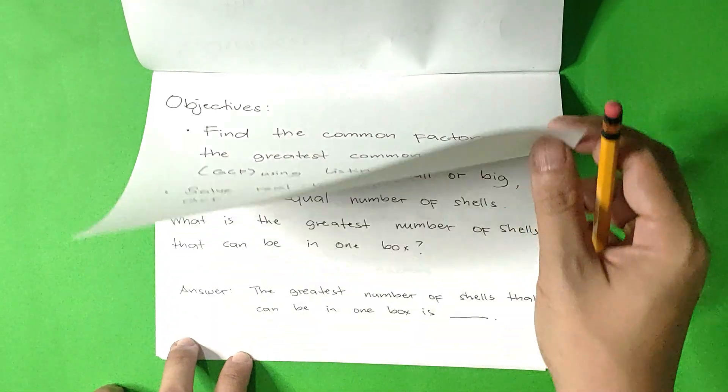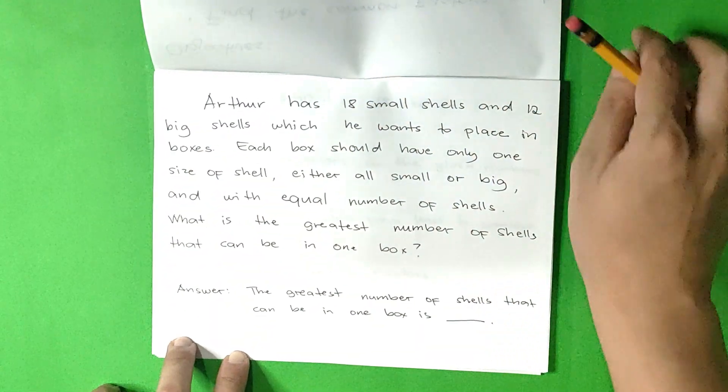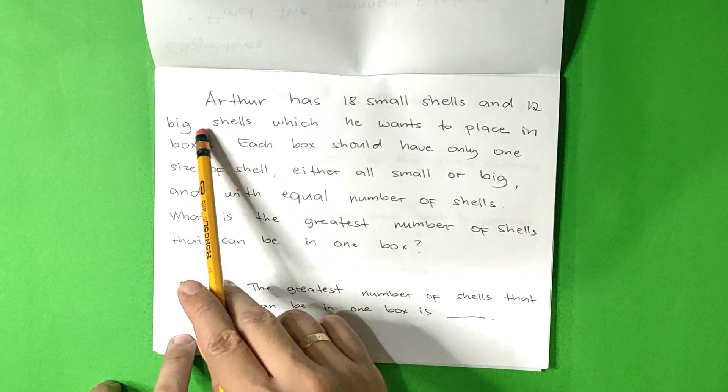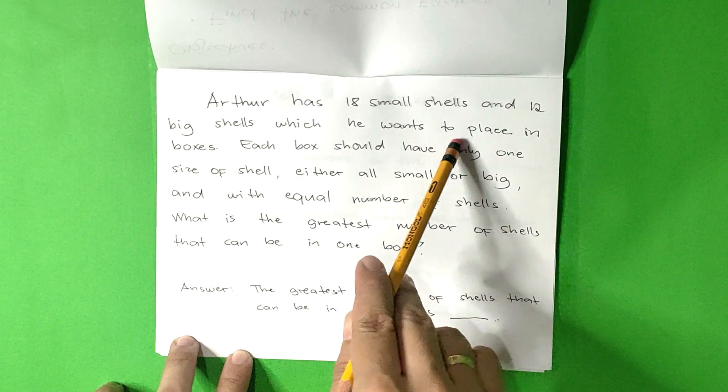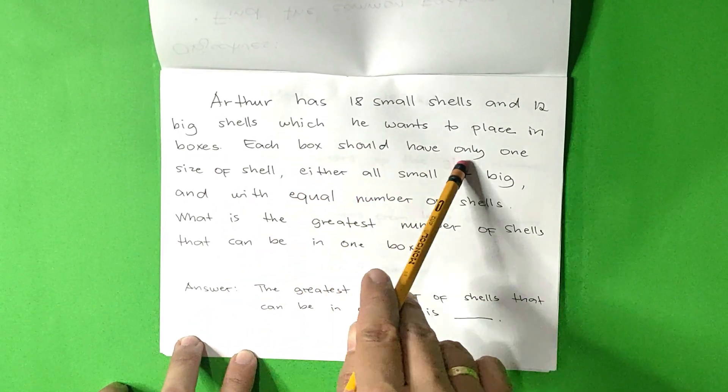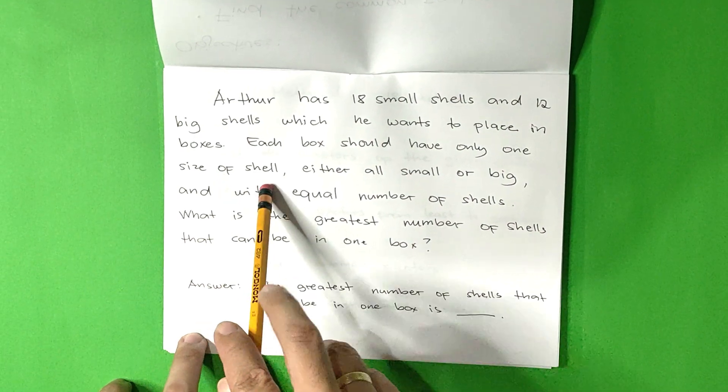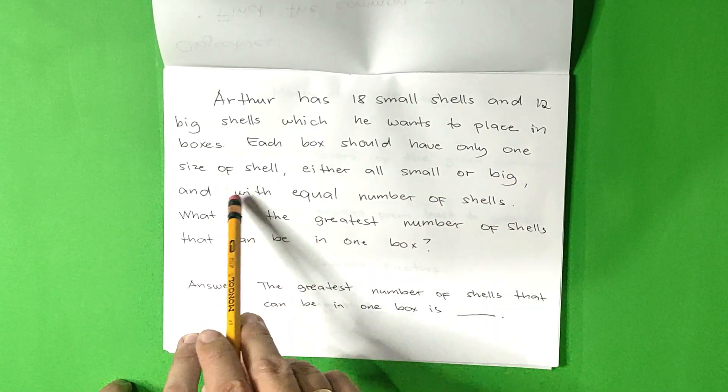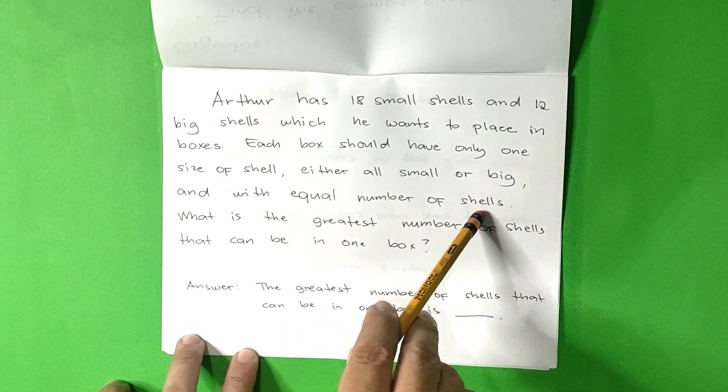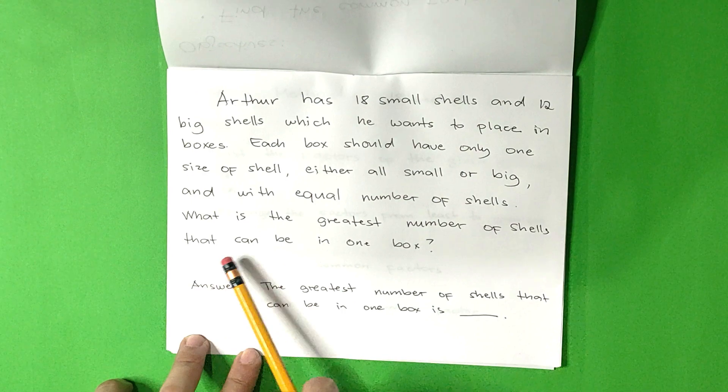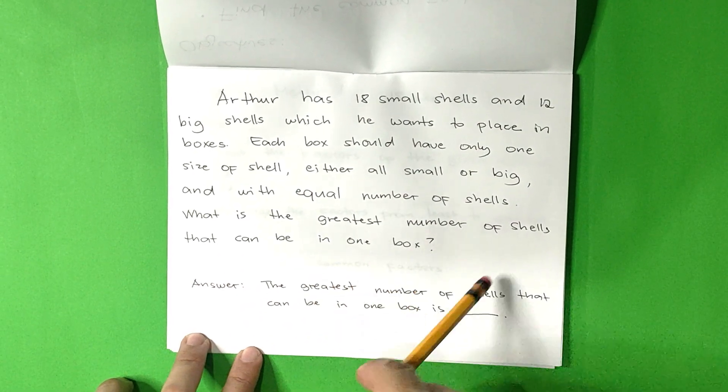Let us have an example. Arthur has 18 small shells and 12 big shells which he wants to place in boxes. Each box should have only one size of shell, either all small or all big, and with equal number of shells. What is the greatest number of shells that can be in one box?